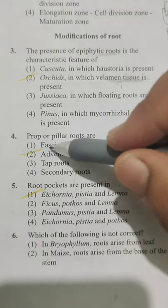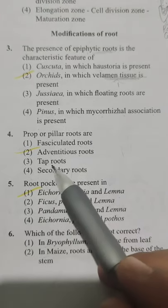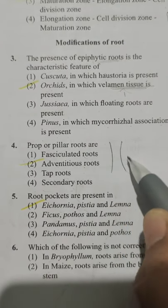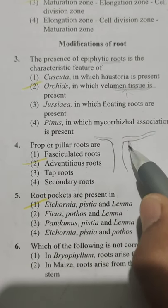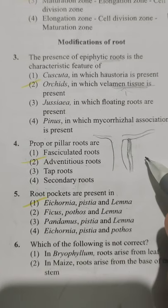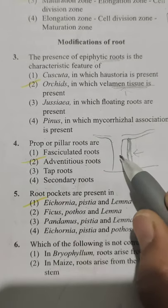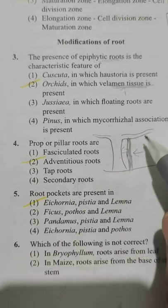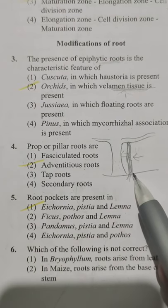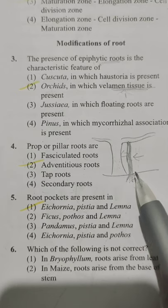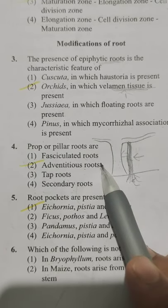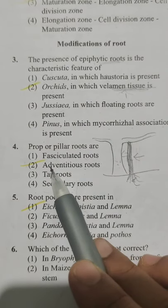Next: prop or pillar roots are — Option 1 fasciculated roots, Option 2 adventitious roots, Option 3 tap roots, Option 4 secondary roots. In banyan trees, adventitious roots arise from branches, and once they touch the ground they become strong pillar-like structures, mimicking the main trunk and providing mechanical support. They also absorb water and mineral nutrients. These are called pillar roots or prop roots, and the answer is Option 2: adventitious roots.